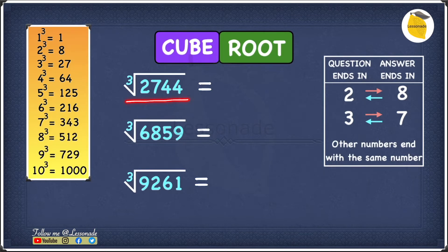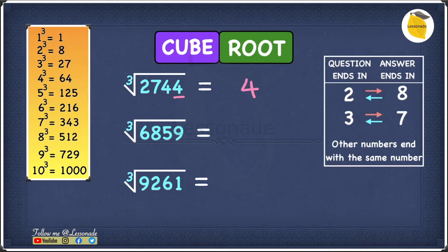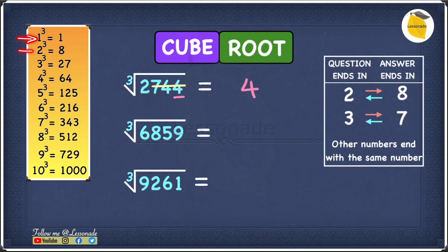Let's have a look at this example: the cube root of 2744. Let's start by having a look at the last digit, which is 4. We know that 4 goes in the category where other numbers end with the same number, so our answer will also end with 4. Next, we cross out the last three digits — 7, 4, 4 — and we're left with 2. This 2 fits in between 1 cubed and 2 cubed in our list of cube numbers. Since 1 cubed is smaller than 2 cubed, our answer will start with 1. So our answer is 14.